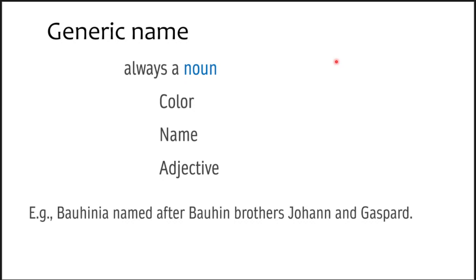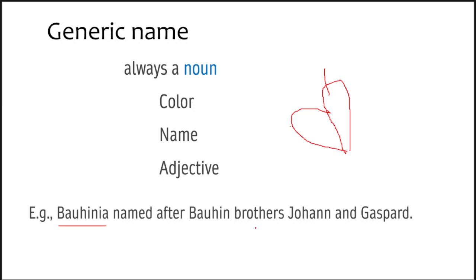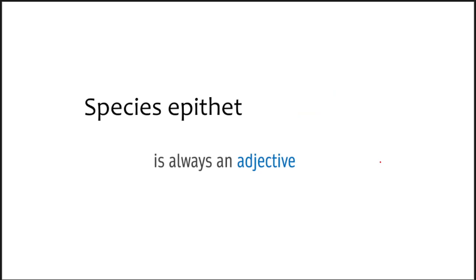The generic name may indicate colours, names, or adjectives. For example, Bauhinia is a very common genus named after the Bauhin brothers. Since they were brothers, and Bauhinia also has got two leaves — a very characteristic feature — the two-lobed leaf depicts the two brothers, Johan and Gaspar, as named by Linnaeus. So naming need not indicate any particular aspect as such, but it can indicate a colour, name, or adjective. That is very important.